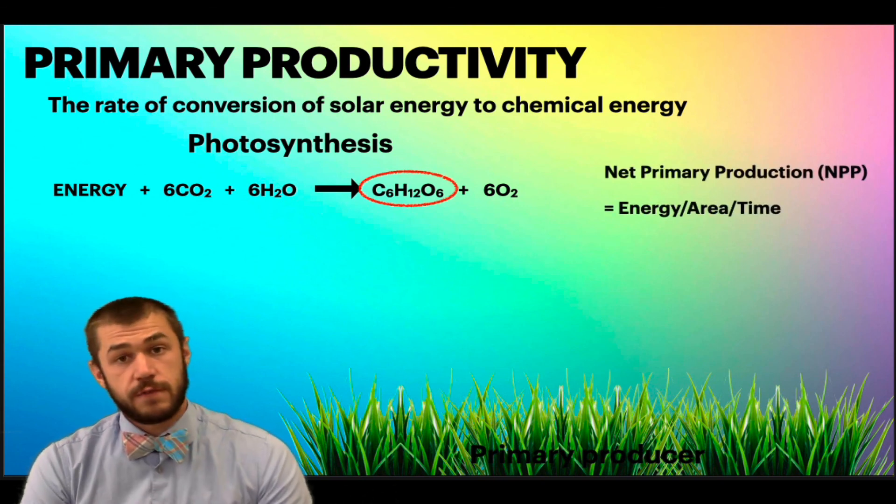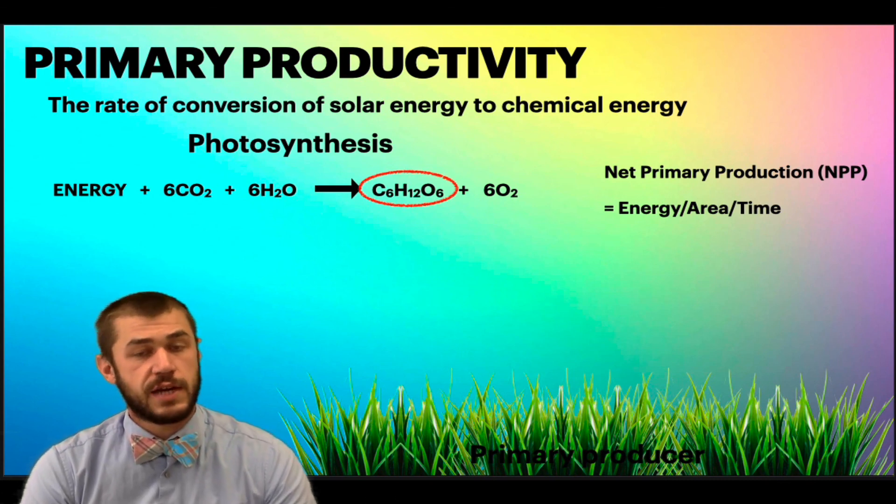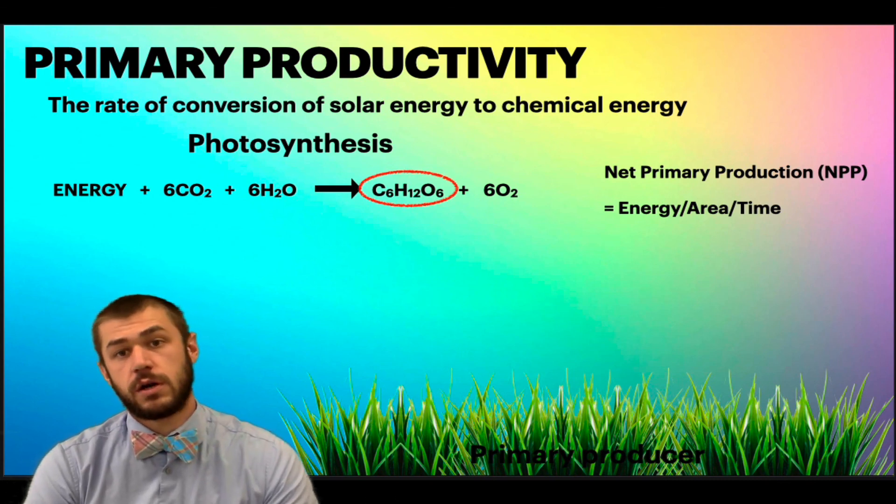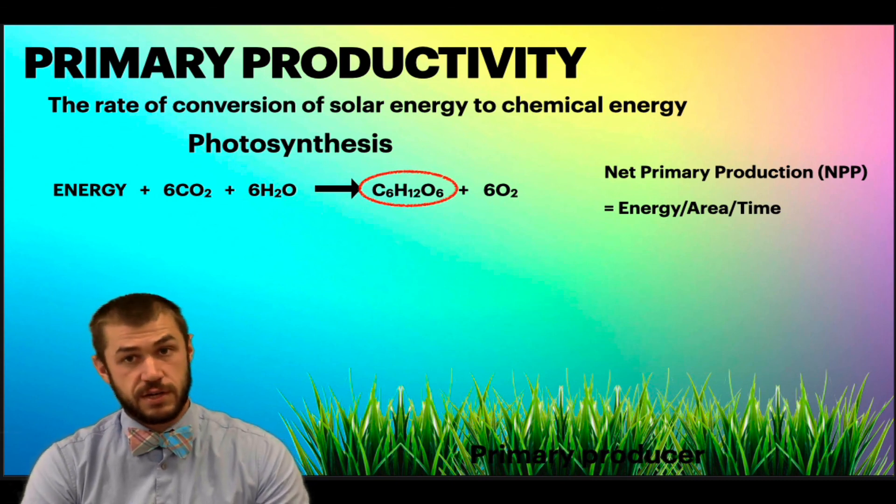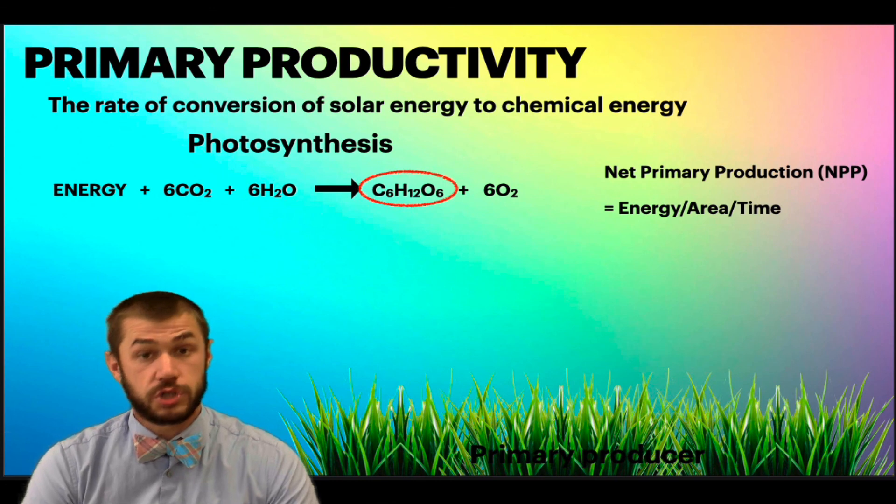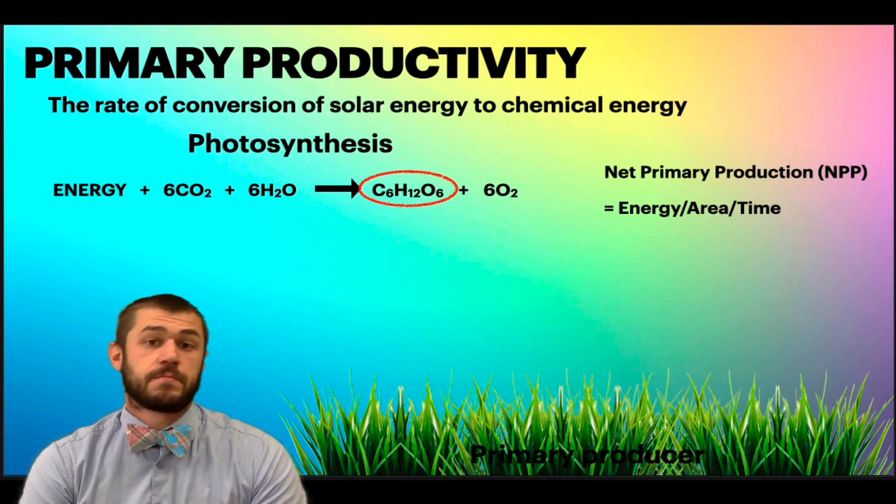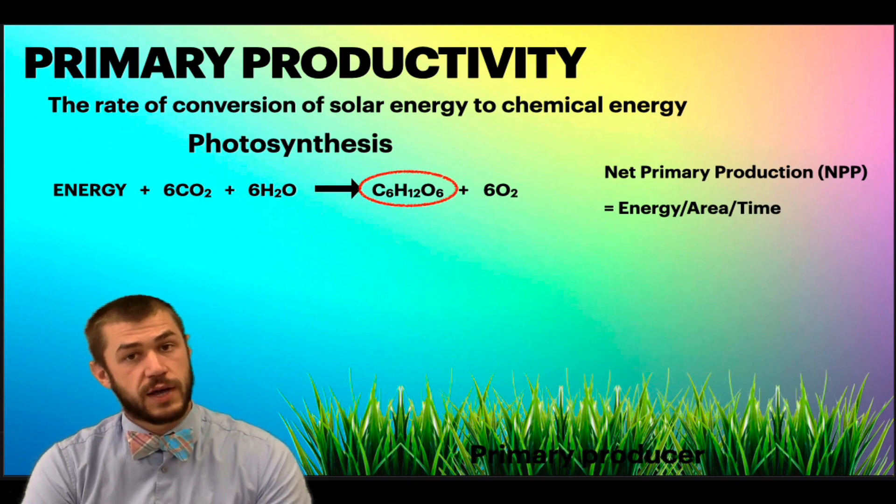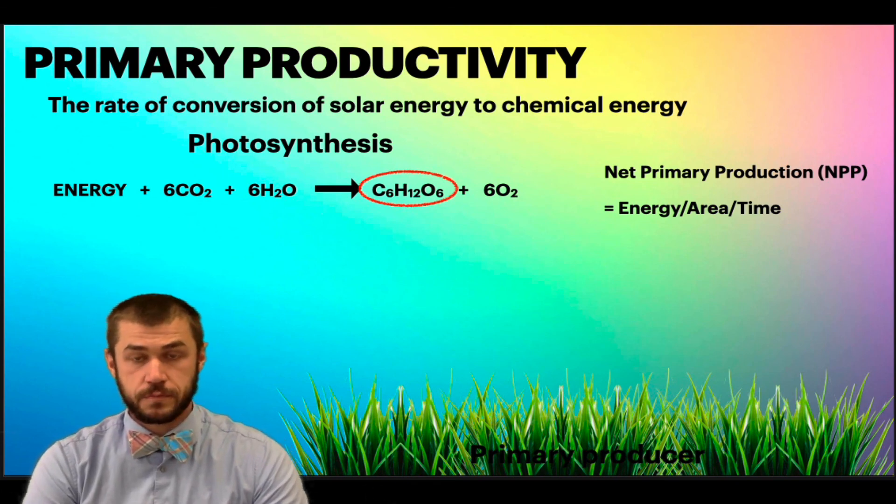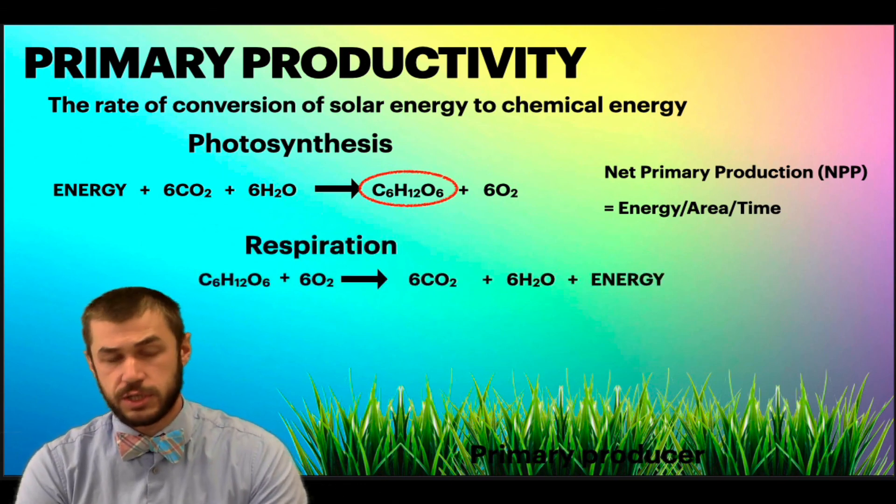All of the photosynthesis that occurs within a given area over a given time is what we call net primary productivity or NPP. So the amount of sugar or starch produced in a given area over a given time is what we would refer to as net primary productivity.